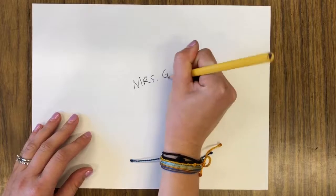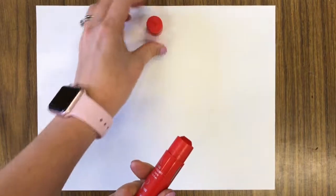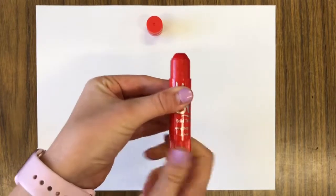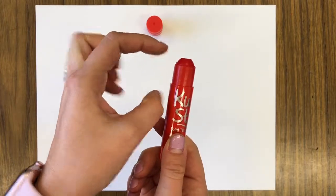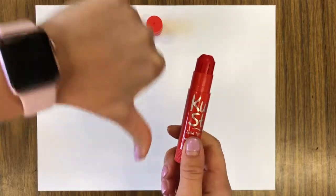Start by writing your name on the back of your paper. Then flip it over and you can start painting. Start by taking the cap off of your red paint stick. Twist the bottom of your paint stick three times so the paint comes up just a tiny bit. You do not want your paint to be too tall or it will break off.